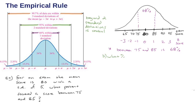Let's try another one. What percent had a score between 70 and 90? Finding that on our graph, that's going to be 95%, because we're going two standard deviations in both directions. The empirical rule tells us within two standard deviations, that's 95%.